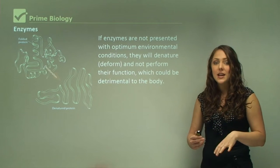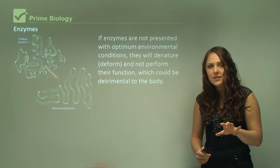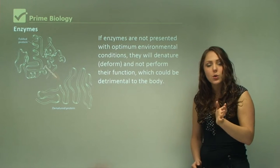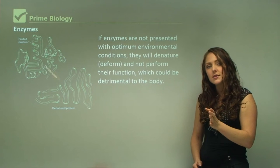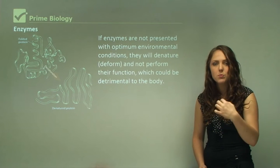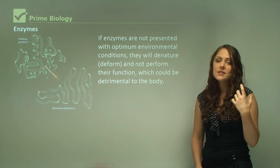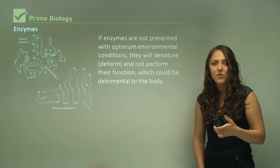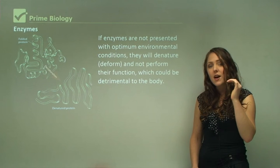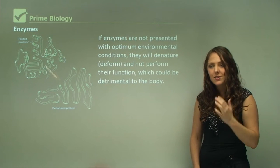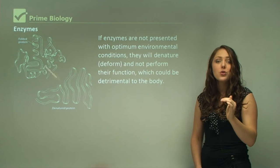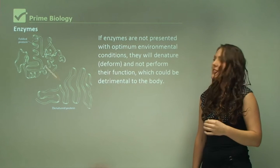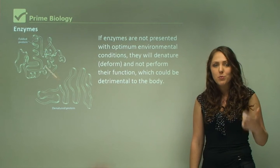Our body is actually at 36.5 degrees and it can fluctuate slightly, but if it fluctuates a lot — say for example if it reaches 40 degrees — our enzymes start to break down and not work because they're not conditioned to work in warmer environments. It's just the same if our body temperature were to decline below 36 degrees; that's very detrimental to our body as well, because the enzymes will slow their processing.